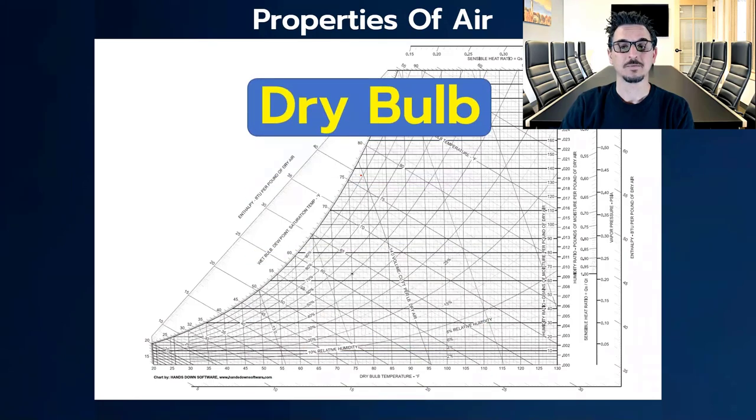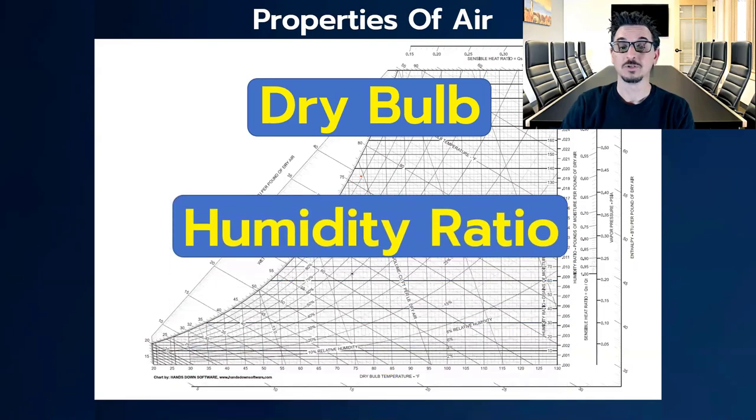There's two properties of air that we need to be familiar with when we're talking about cooling and dehumidification. The first one's dry bulb, the second one's humidity ratio. Let's go ahead and look at both those right now.